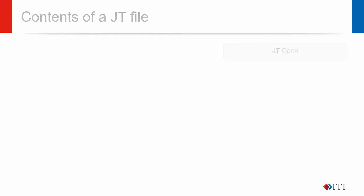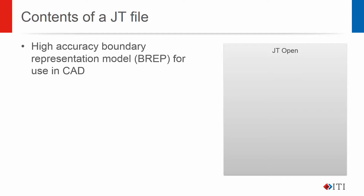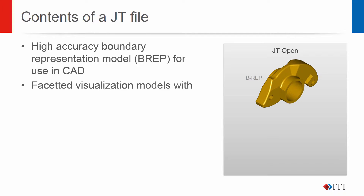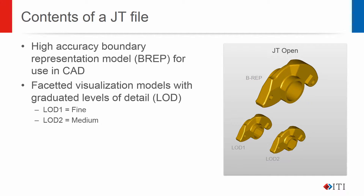A JT file can contain an accurate boundary representation of a part for use in CAD and analysis systems. It may also contain faceted representations of the part at different levels of accuracy, known as level of details or LODs. For example, LOD 1, 2, and 3 are lightweight faceted representations of the part generated at different tolerances for use in downstream applications such as viewing or digital mockup.